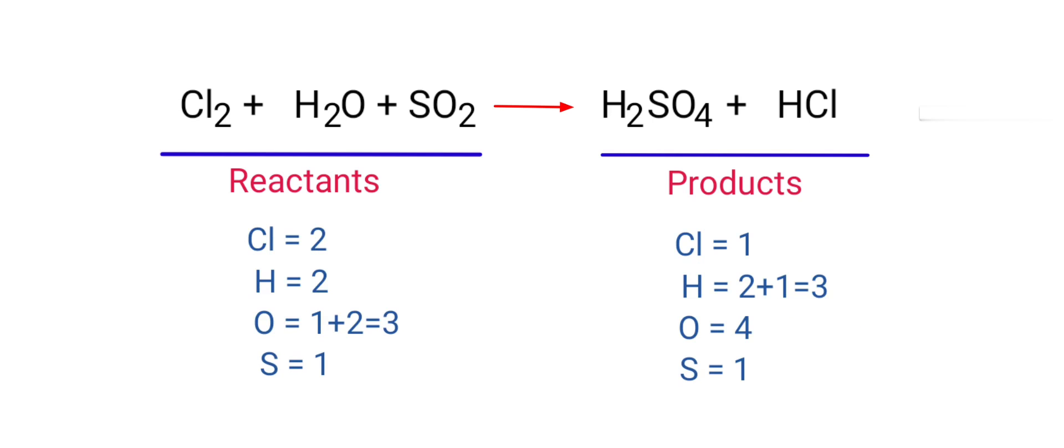If you look at this equation, the equation is not balanced. In the reactants side, there are 2 chlorine atoms, 2 hydrogen atoms, 3 oxygen atoms, and 1 sulfur atom present. In the products side, there are 1 chlorine atom, 3 hydrogen atoms, 4 oxygen atoms, and 1 sulfur atom present.